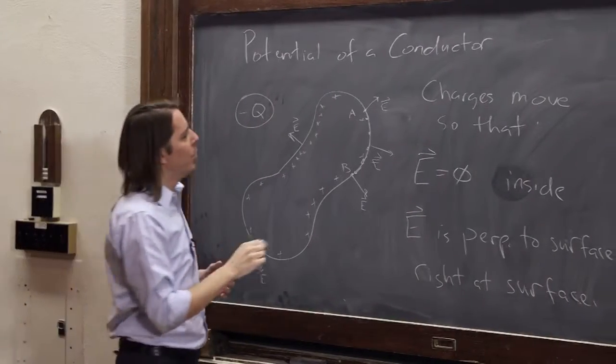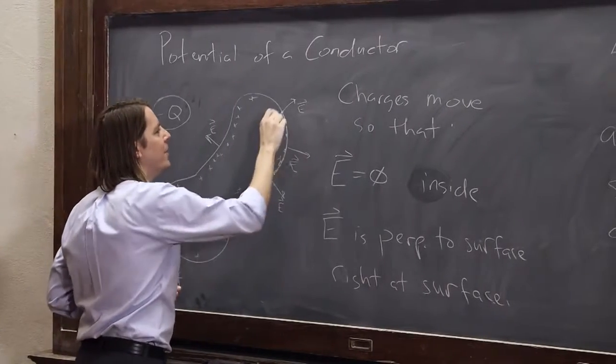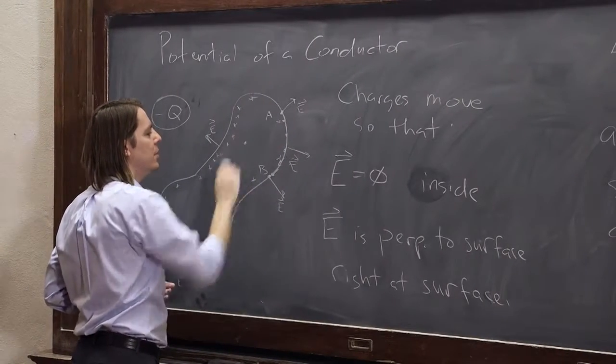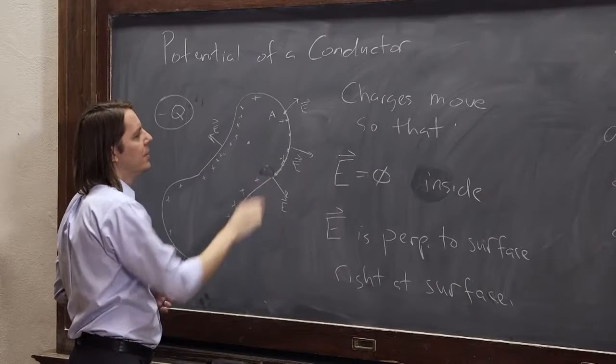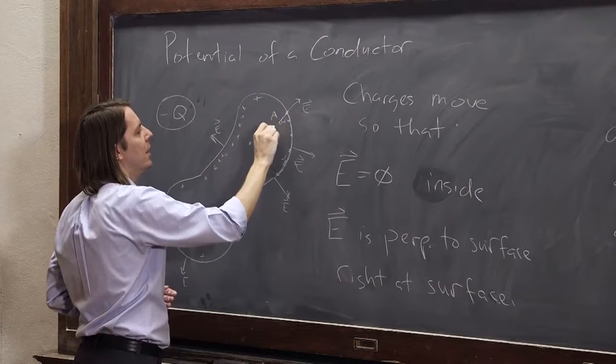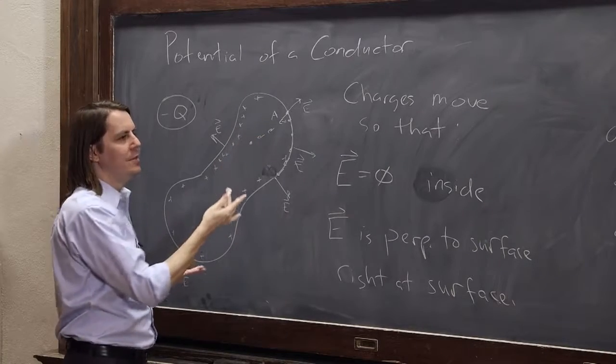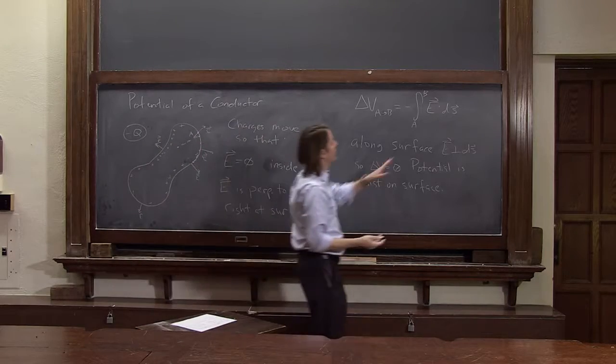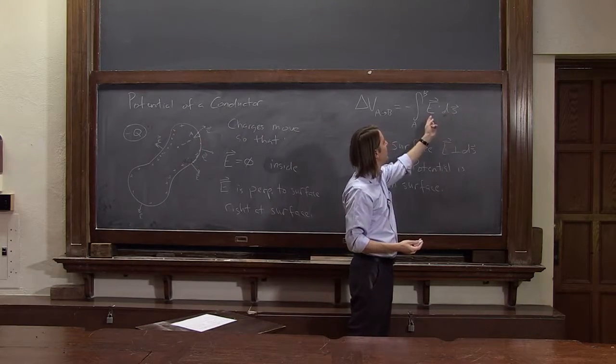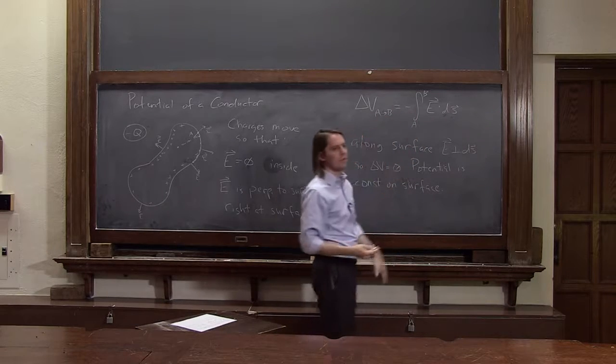We can even say a little bit more. What if you go inside? What if you're at a and you go and put b there? Well, now you can have your ds's go in other directions on the surface, but the e field is zero. So ds can be whatever it wants. If the electric field is zero, then delta V is also going to be zero.